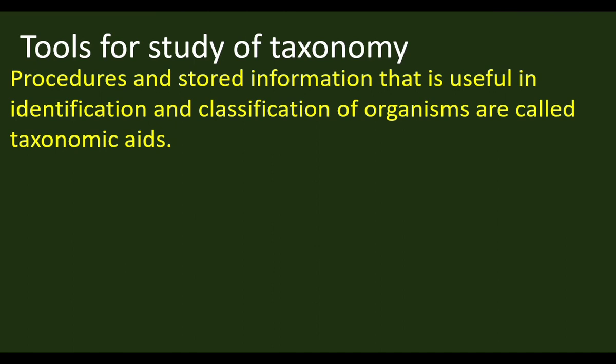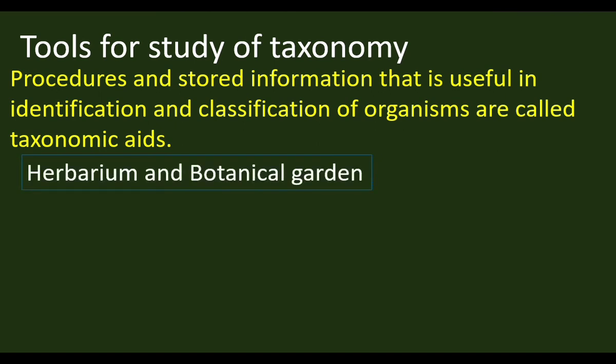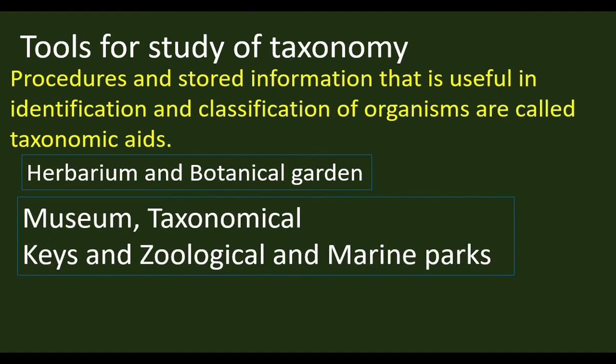Taxonomic aids are procedures or stored information used for identifying and classifying organisms. For plant taxonomy, different kinds of tools are used, and for animal taxonomy, other types of tools are used. Herbarium and botanical gardens are used as tools for classifying plants. Museum, taxonomical keys, and zoological and marine parks are zoological tools. These are classical taxonomical tools.